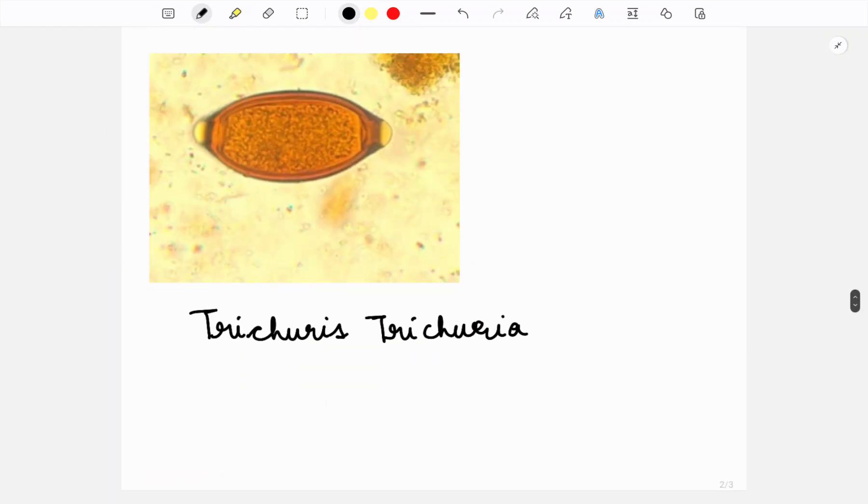This is the egg of Trichuris trichiura. The characteristic feature is it's a barrel-shaped egg with two mucus plugs at the end.